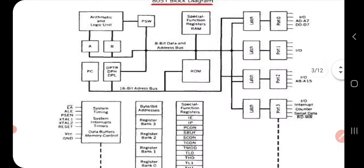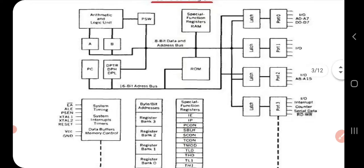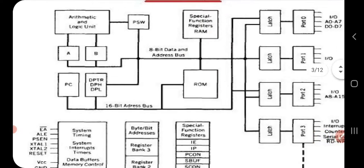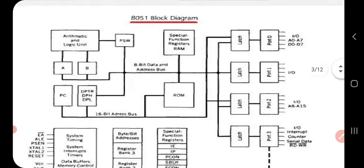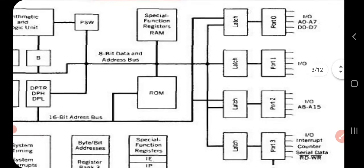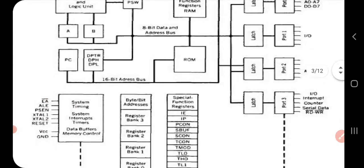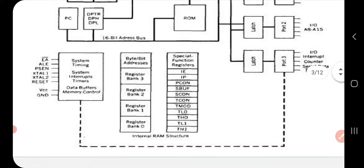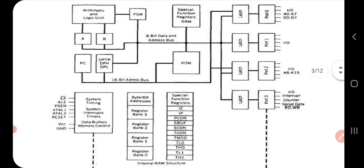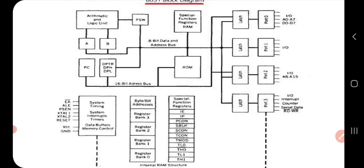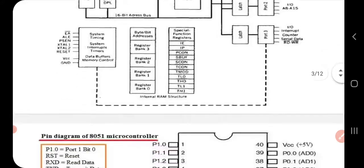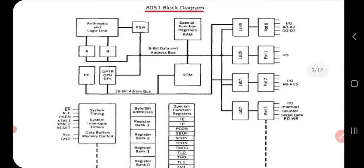This block diagram shows the various components discussed above, including the arithmetic logic unit, A and B registers, program counter, and the four ports (P0 to P3). If possible, you can draw a rough sketch of this block diagram, though you may not have time to draw these figures in exams.